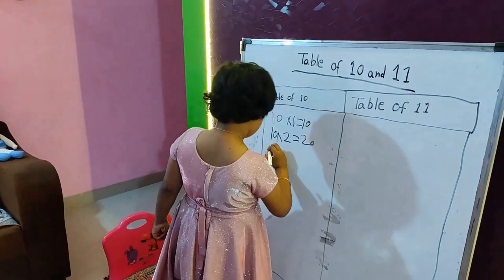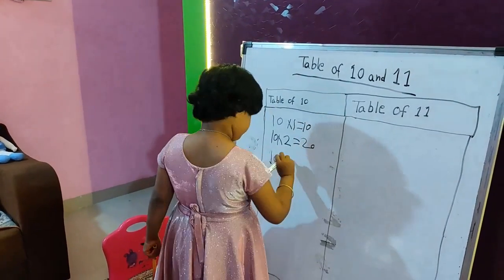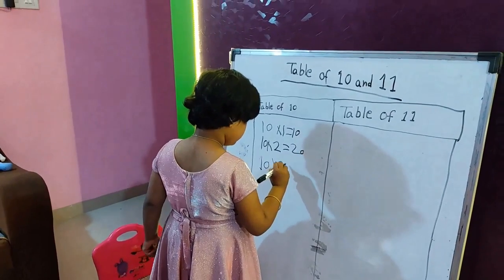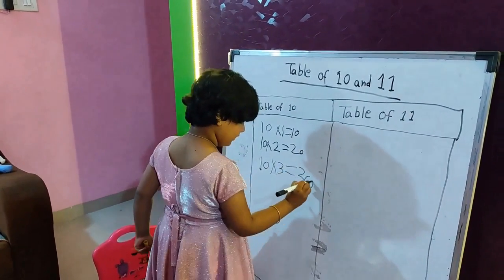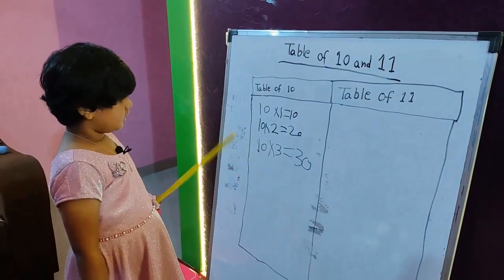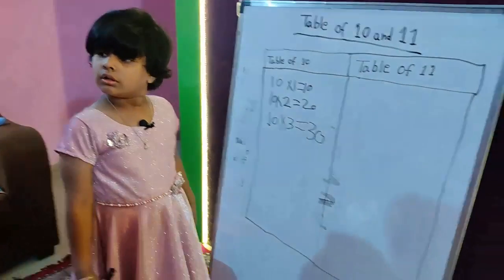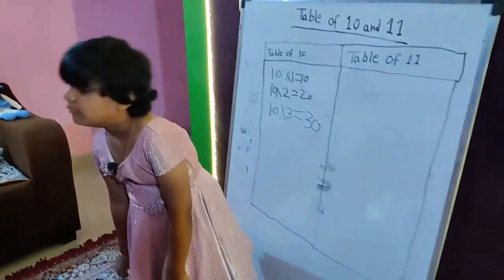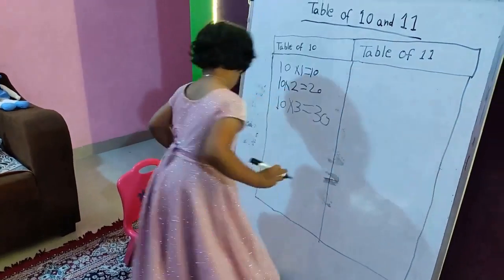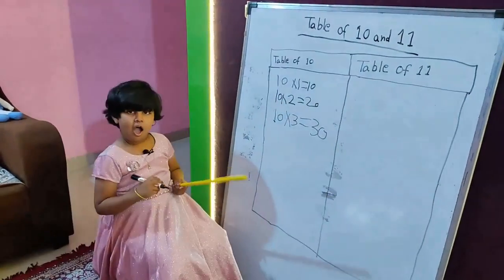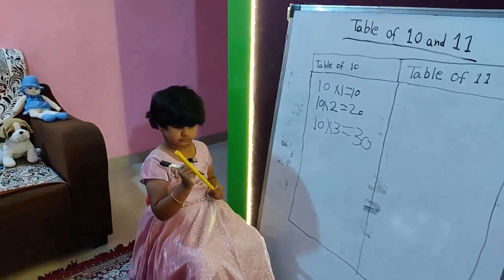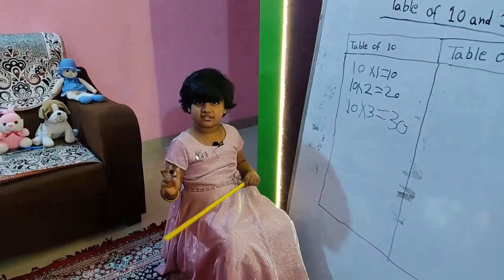Ten multiply three equals thirty. Ten multiply three equals thirty, yeah. Next, you take your chair please. I'm looking the small, next.